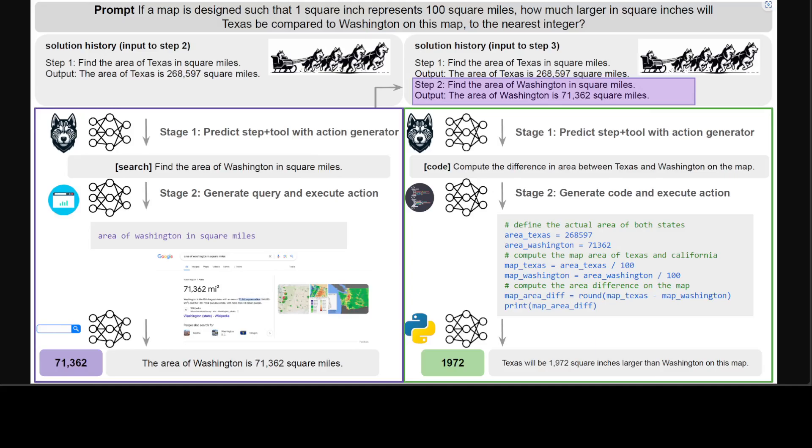As shown in this diagram, Husky employs multiple language models in parallel to solve a complex task, with the action generator coordinating the expert models, similar to how several huskies pull a sleigh together.